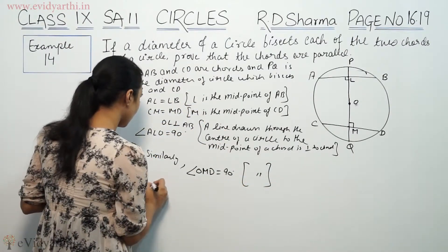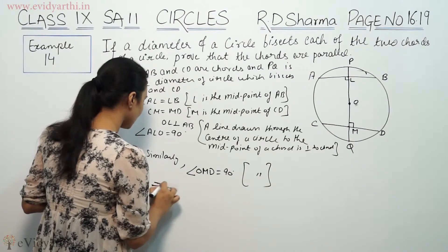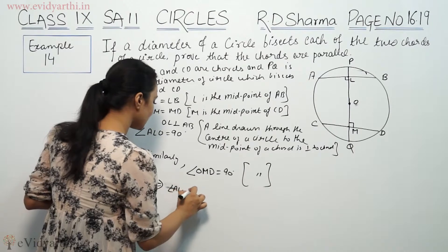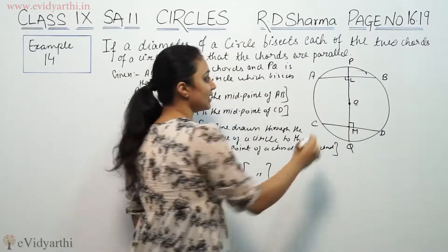So therefore both are 90 degrees. This implies that angle ALO is equal to angle OMD. This angle is equal to that angle.